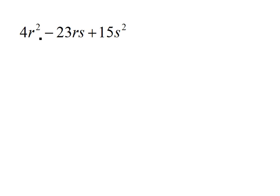Here we have a problem: 4r² - 23rs + 15s², and we're supposed to factor this. Our first rule of factoring is always to pull out a GCF if we have one. In this case we do not.